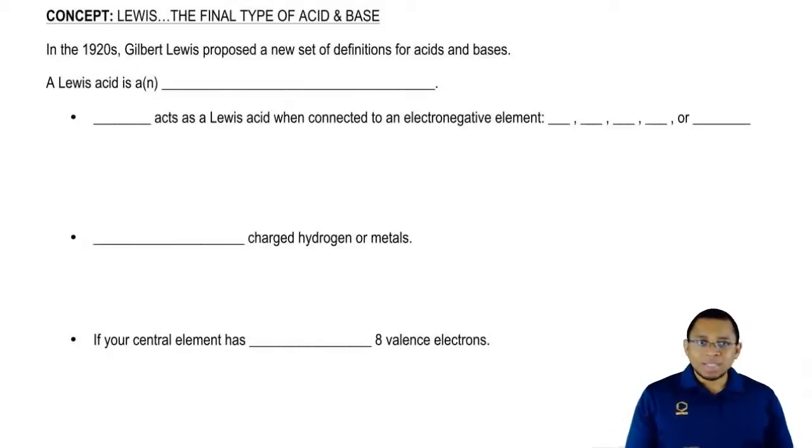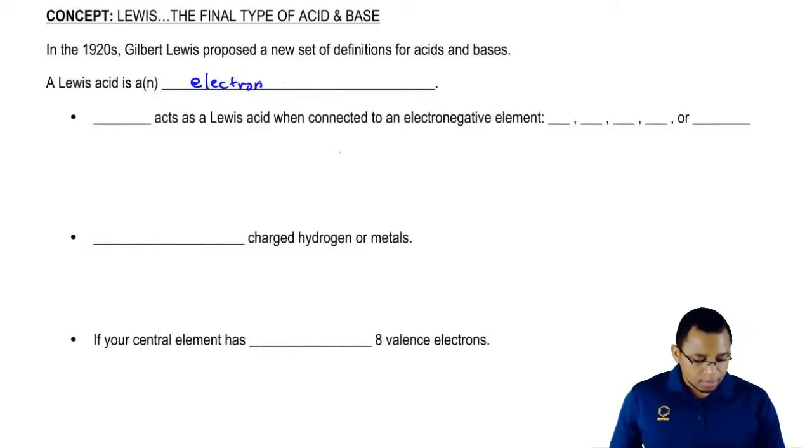He defined a Lewis acid as something that accepts electrons. So a Lewis acid is an electron acceptor. To understand a Lewis acid, we have to figure out what are the different types of Lewis acids.